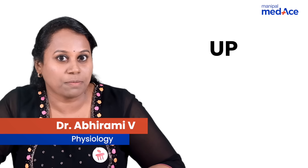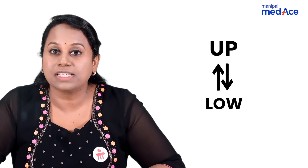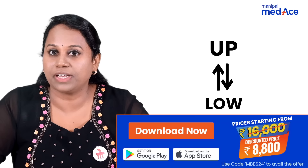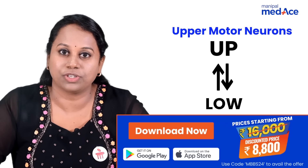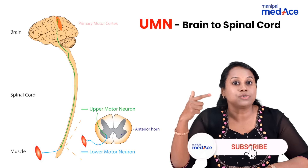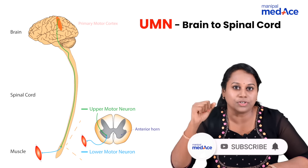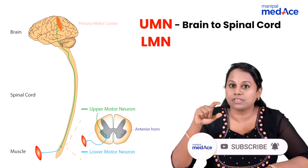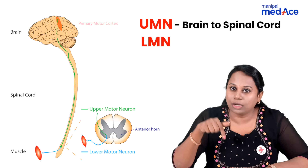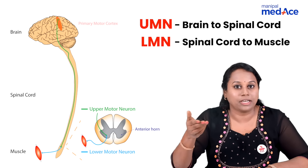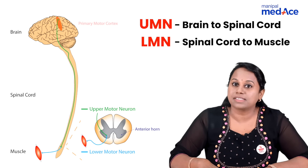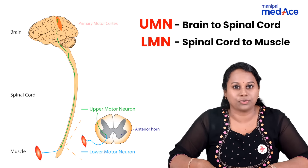Opposites in physiology — opposite of up is low. With this we are going to learn the differences between upper motor neurons and lower motor neurons. The neurons that are up, meaning from brain to spinal cord, are called upper motor neurons. Lower motor neurons are the neurons that are low, meaning from spinal cord to the muscles.